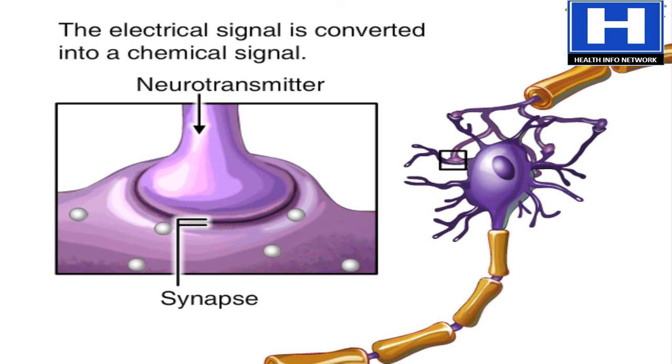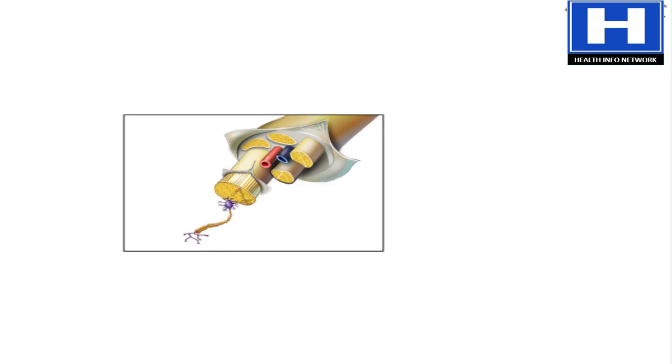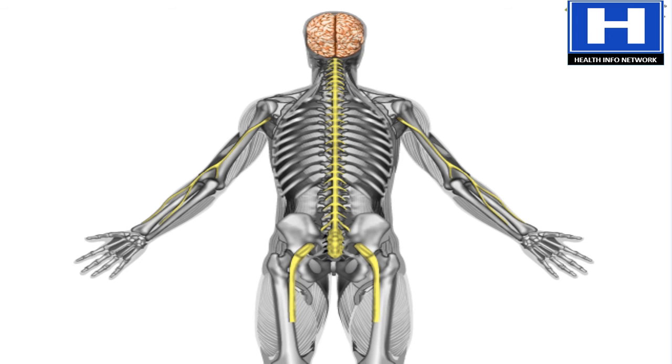Neurotransmitters allow the billions of neurons in the nervous system to communicate with one another. That's what makes the nervous system the body's master communicator.